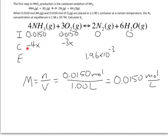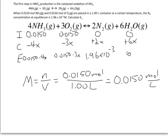Whatever sign I give to the change of the reactants, I have to give the opposite sign to the change in the products. So that means the nitrogen is going to be plus 2x and the water is going to be plus 6x. At equilibrium, the ammonia is going to be 0.0150 minus 4x, the oxygen is going to be 0.0150 minus 3x, and the water is going to be 0 plus 6x, so just 6x.